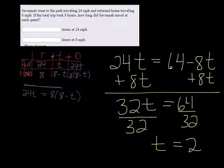So it took her 2 hours at 24 miles per hour. And then you subtract that from 8, and you get 6. So 8 minus 2 equals 6 for the return trip. That's it.